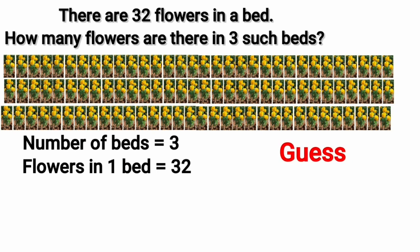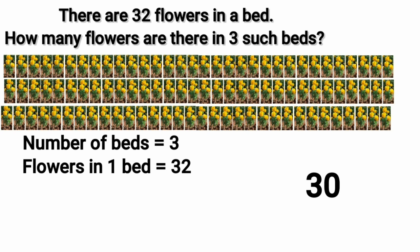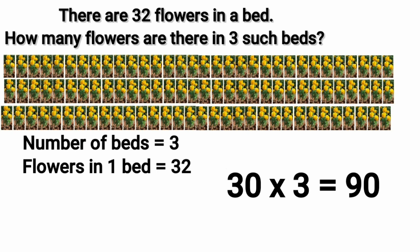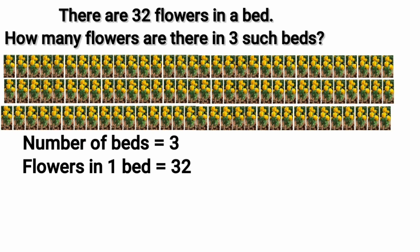So we will make a guess — are the flowers more than 100, less than 100, or more than 200? There are 32 flowers in a bed, so the number of flowers in 3 beds is 32 multiplied by 3. To estimate, we round 32 to 30. 30 multiplied by 3 is equal to 90, so around 90 — less than 100 flowers. Let's solve this using the proper method.